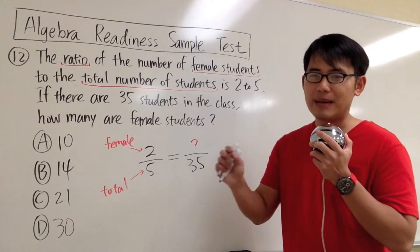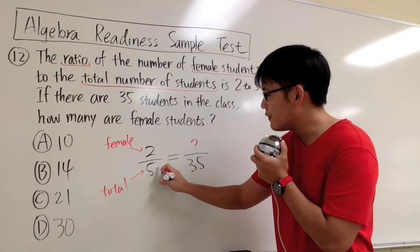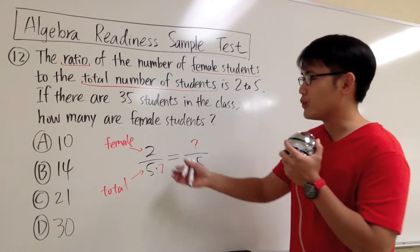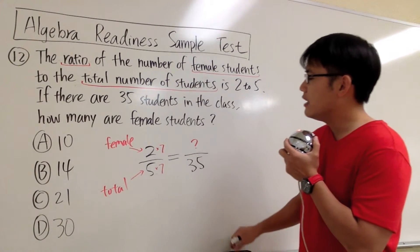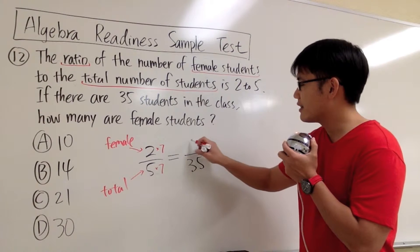We know that 5 times 7 will give us 35. Therefore, we're going to do 5 times 7, that's how we can produce 35. Likewise, we'll do the same on the top. 2 times 7, and that will give us the answer. 2 times 7, that's 14. And that will be the numerator.